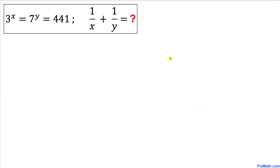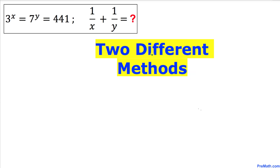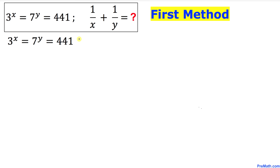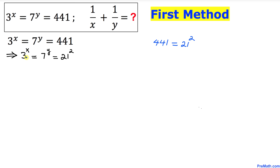Let's go ahead and get started with the solution. In this video tutorial I will be sharing two different methods. Here's our very first method. Let's focus on this constant 441 — we know that 441 could be written as 21 squared.